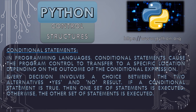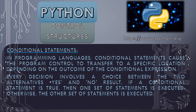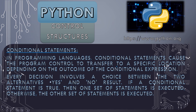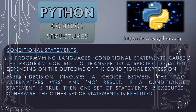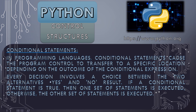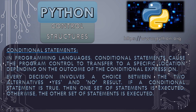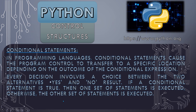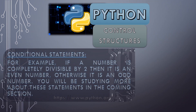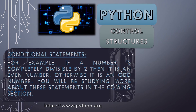In conditional statements, the program control transfers to a specific location depending upon the outcome of the conditional expression. Every decision involves a choice between two alternatives: yes or no. If the condition is true, one set of statements is executed; if false, the other set is executed. For example, if a number is completely divisible by two then it is even, otherwise the number is odd.